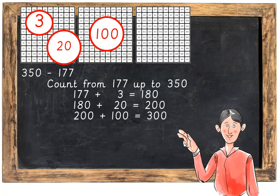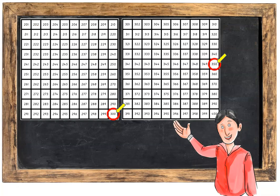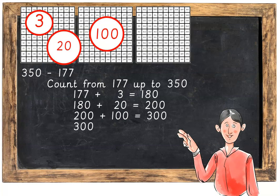Now we've jumped 3, we've jumped 20, we've jumped 100. The next step is 300 up to 350, which is a jump of 10, 20, 30, 40, 50. So 300 plus 50 is equal to 350.